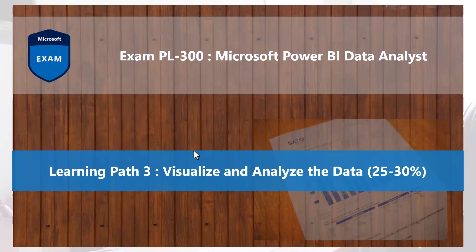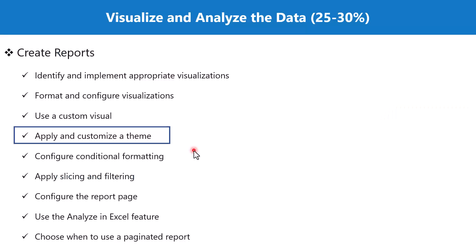Bismillahirrahmanirrahim. Hello everyone, welcome back to the PL-300 exam preparation series where we are exploring the third learning path: visualize and analyze the data. In this video we are going to explore the topic 'apply and customize a theme', which is part of the section 'create reports'. In the previous video we had a look at the report page configuration, and once we have configured the report page the next step is to apply and customize a color theme.